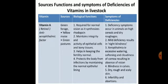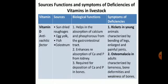Vitamin D, the anti-rachitic factor, is present in sun-cured roughages, egg yolk, fish, and colostrum. Its biological function is to help in absorption of calcium and phosphorus from the gastrointestinal tract, enhance absorption of calcium and phosphorus from the kidney, and aid in deposition of calcium and phosphorus in bones. Deficiency symptoms include rickets in young animals, characterized by bending of legs and large painful joints, and osteomalacia in adults, characterized by lameness, bone deformities, and weakness of bones.